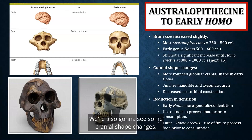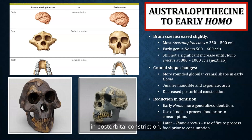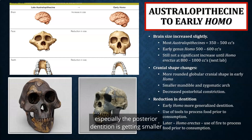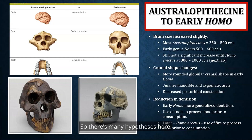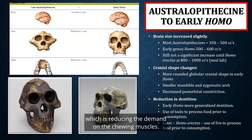We're also going to see some cranial shape changes. For genus Homo, we have a much more rounded, globular cranial shape. The mandible is getting smaller, the zygomatic arch is getting smaller, and we also see a decrease in postorbital constriction. Dentition is also reducing, especially the posterior dentition, indicating that genus Homo had a much more generalized diet.